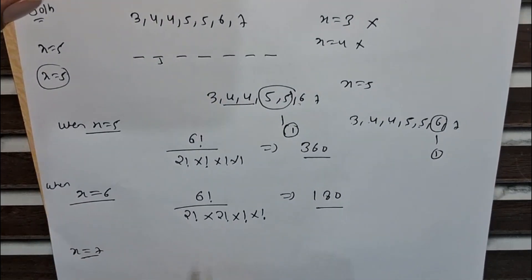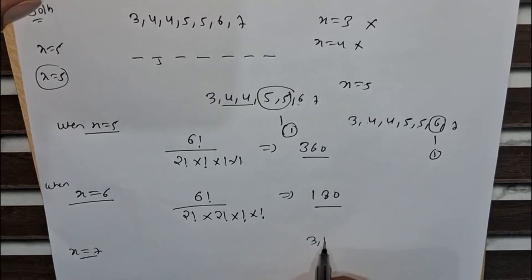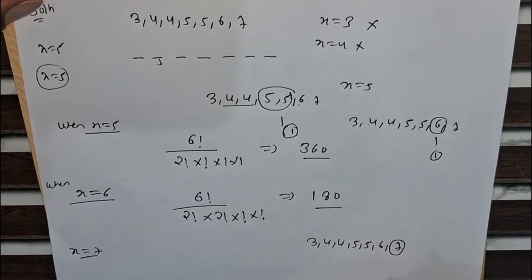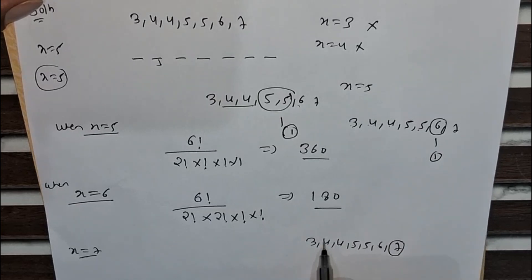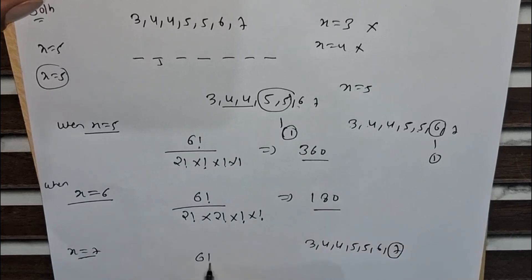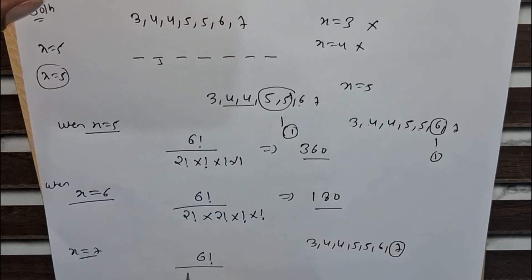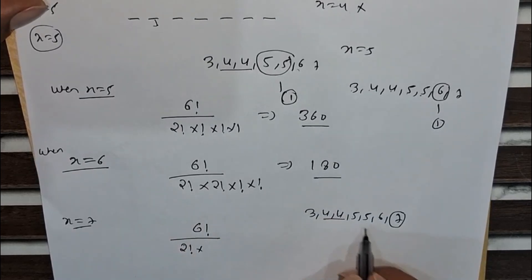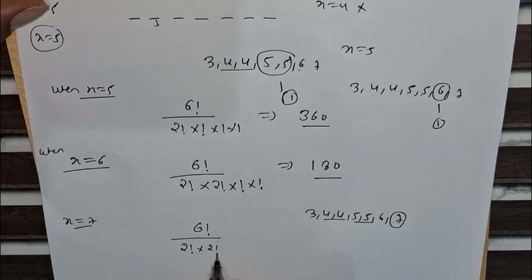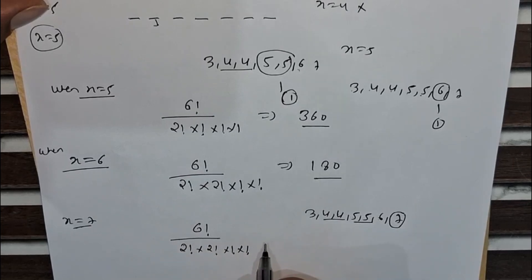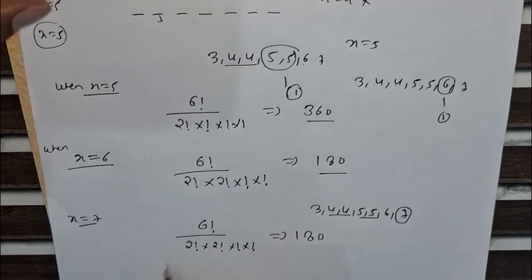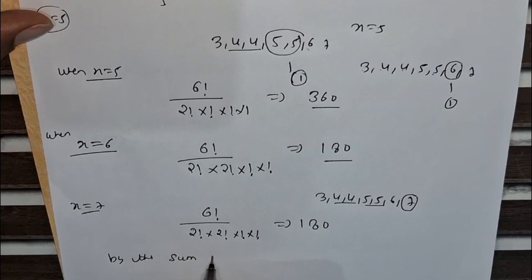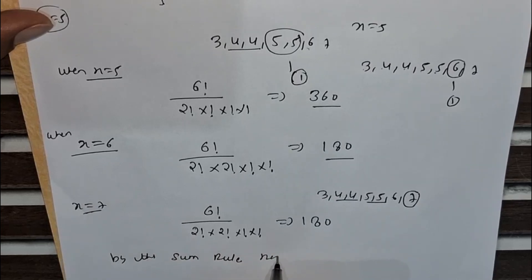Now we take x equals to 7. The remaining digits are 3, 4, 4, 5, 5, 6 — 6 digits. The arrangement is 6! divided by 2! (for 4 appearing twice) divided by 2! (for 5 appearing twice), divided by 1! for each of 3 and 6. This also gives 720/4 = 180. So when x equals 7, there are also 180 entries.